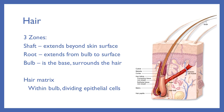Hair has three zones: the shaft is the portion that extends beyond the skin surface — what you can see. The root goes from the skin surface down to the bulb, which is the very base surrounding the hair follicle where growth begins. The hair matrix is inside the bulb and consists of dividing epithelial cells. As they replicate, they push older cells up from the root out through the shaft.